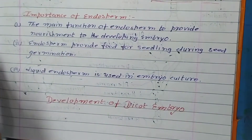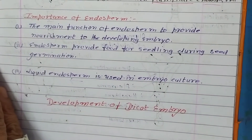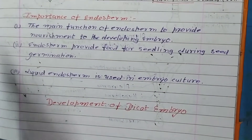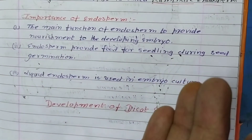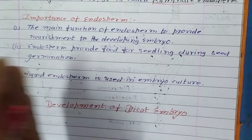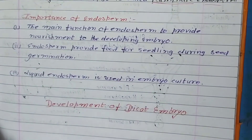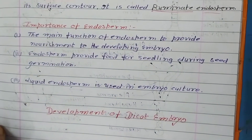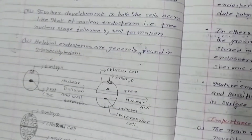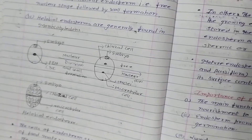To recap: endosperm is formed from the triploid body via free nuclear division, giving nuclear endosperm, or via immediate wall formation, giving cellular endosperm.